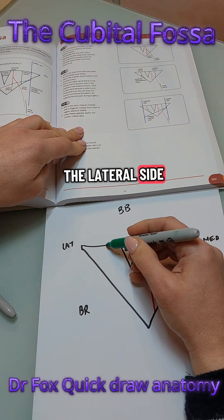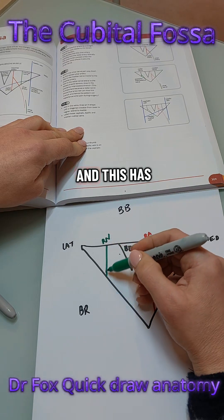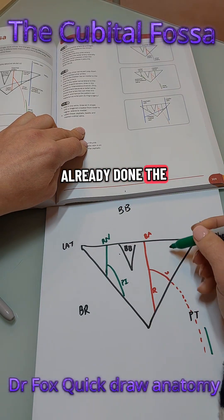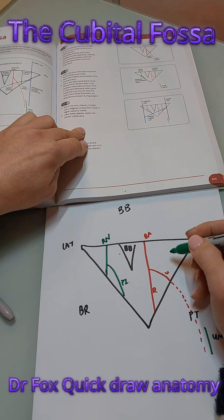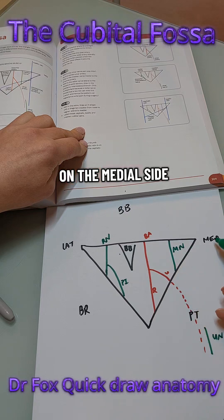So then on the lateral side we'll add in the radial nerve and this has a posterior interosseous branch. And then we've already done the ulnar nerve here and then here we add in the median nerve on the medial side.